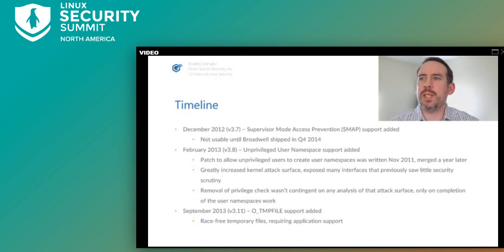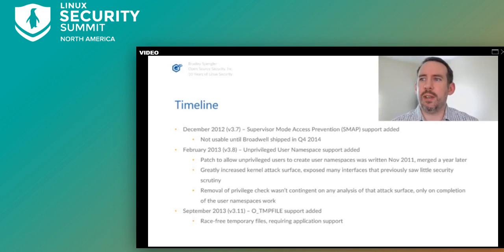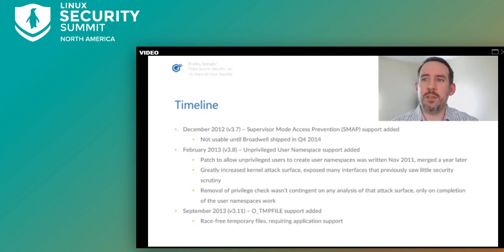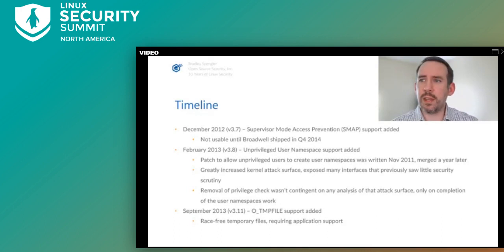In 2012, SMAP support was added, which aimed to prevent direct userland data access in kernel context, but it wasn't usable until late 2014 when Broadwell first shipped with it. Unprivileged user namespaces were enabled in 2013, which, while enabling some new forms of computing important for the recent containerization, have been a net negative on kernel security — a good example of how not to introduce new functionality that exposes a huge amount of kernel attack surface. It seemed to have been enabled without any deep analysis of the attack surface it was exposing. Today, unprivileged user namespace use is a key component of many kernel exploits.